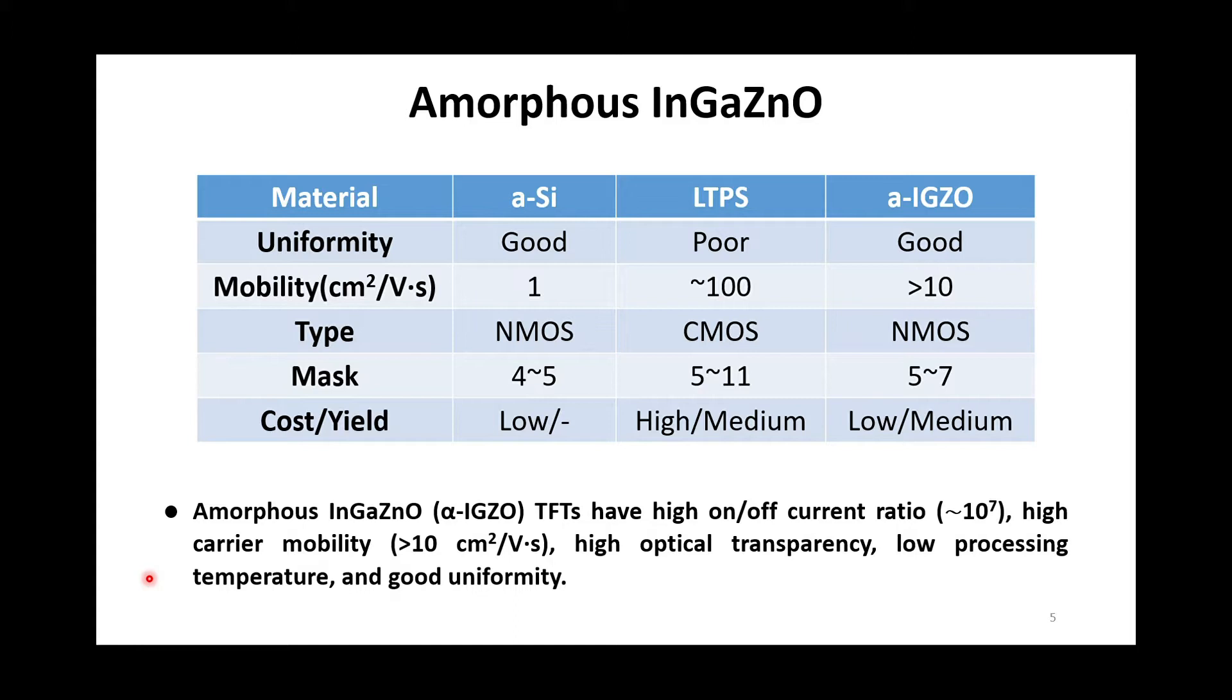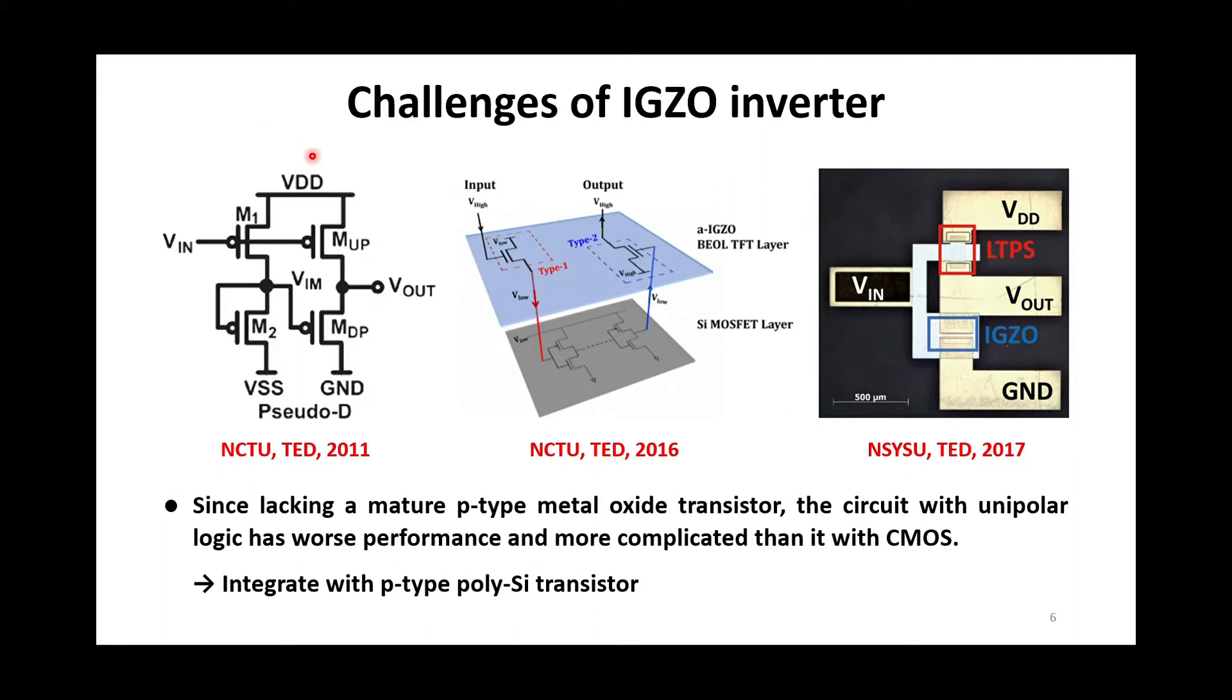However, IGZO can only be operated as N-MOS, and the P-type metal oxide are not stable enough for mass production. Thus, some studies developed the pseudo-CMOS based on monotype transistors.